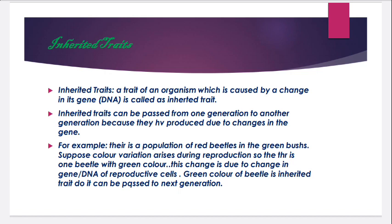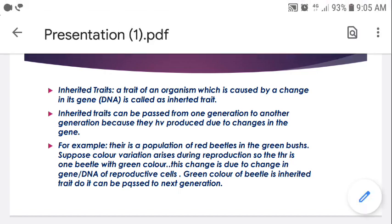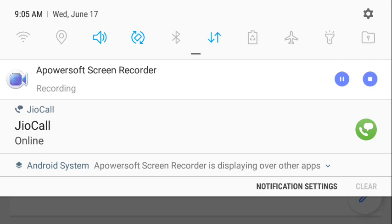We can take another example of acquired traits: if we cut the tail of a rat and it reproduces, its offspring will not have a cut tail — because that is an acquired trait, an acquired character. But if during reproduction there is a variation in the gene, and the offspring comes with different characters or features, those different features can be transmitted from parent to offspring — we call them inherited traits. So dear students, when we understand what acquired traits are and what inherited traits are, we can understand evolution. Thank you.